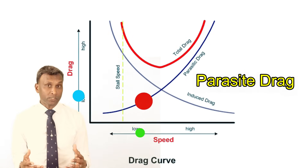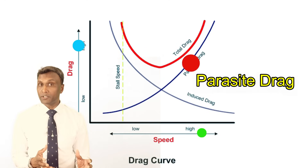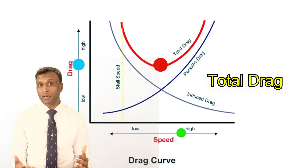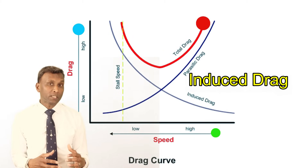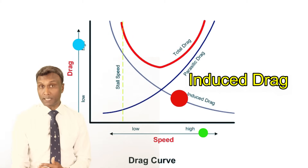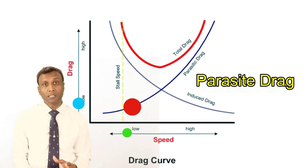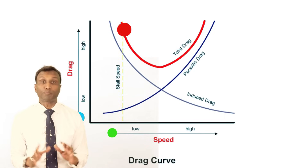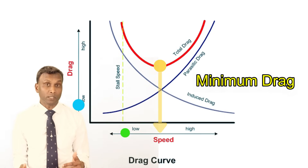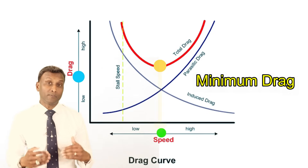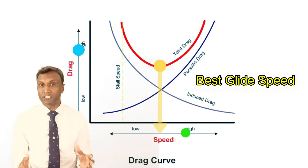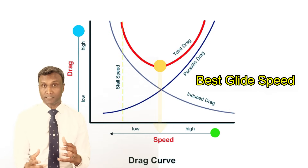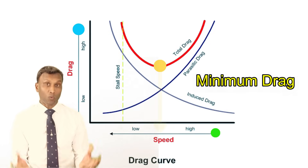Simultaneously, parasite drag — comprising skin friction, interference, and form drag — increases exponentially with speed. As speed escalates, the total drag experiences a noteworthy evolution. Initially at lower speeds, induced drag dominates the total drag. However, as speed increases, parasite drag becomes more prominent, eventually surpassing induced drag. Understanding this curve is paramount for pilots, as it unveils a crucial concept: the speed at which total drag is at its minimum. Pilots refer to this specific speed as the best glide speed — the point of equilibrium where the decrease in induced drag balances the increase in parasite drag, resulting in the lowest overall drag.